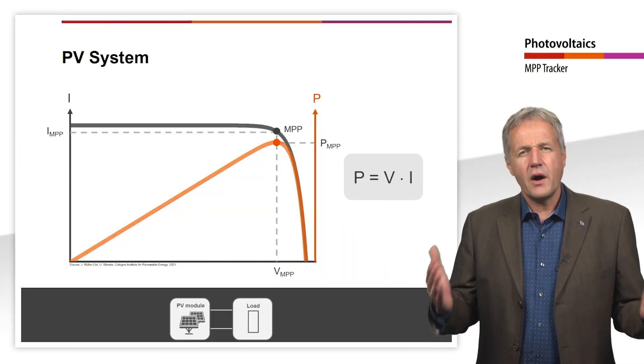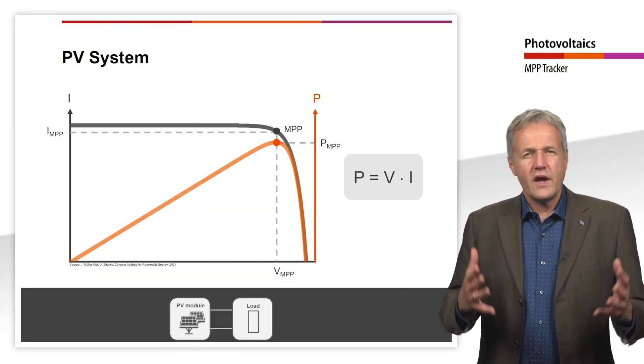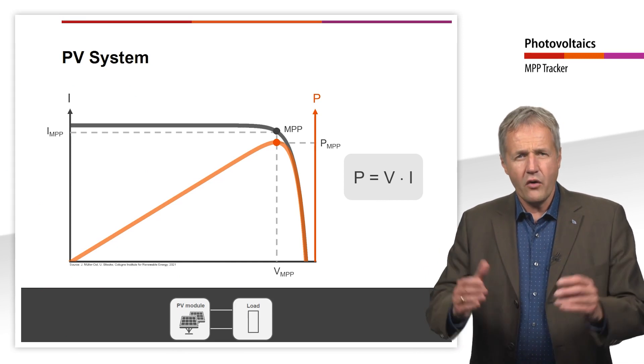The MPP is usually located at the knee of the IV curve. In order to get the maximum power out of the module, we have to run it right at this point.